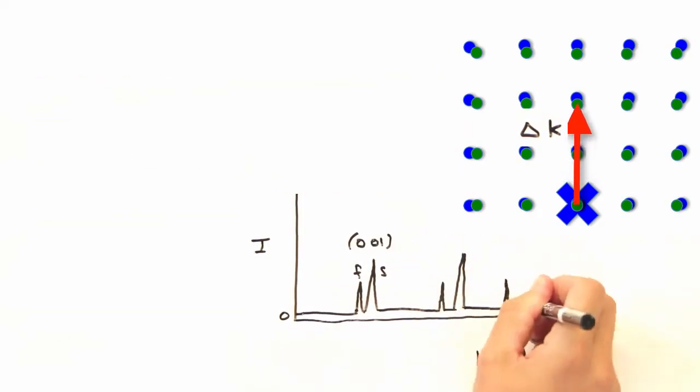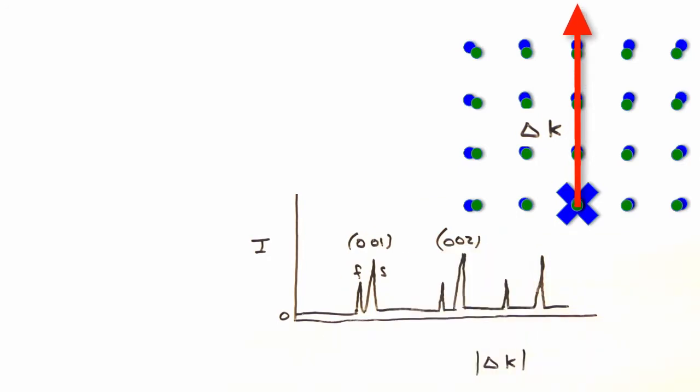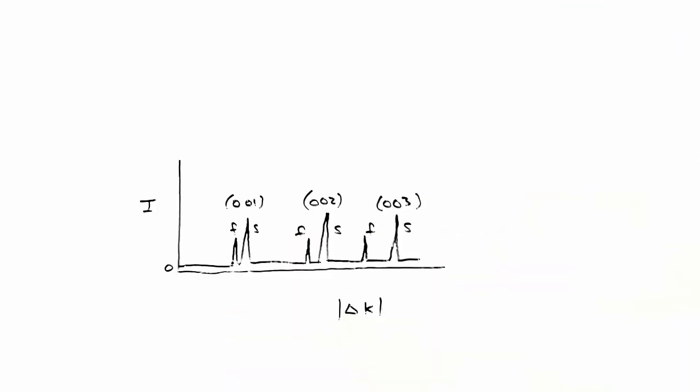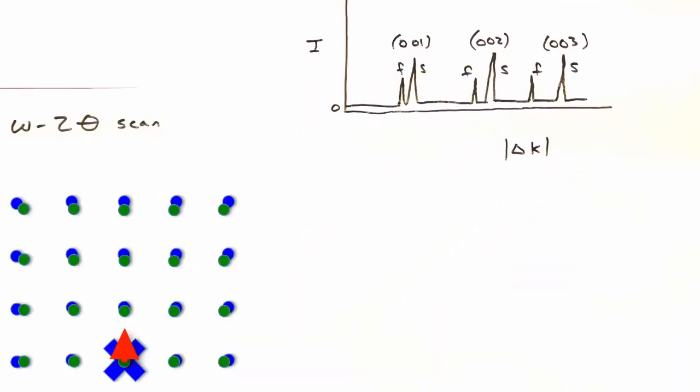And this would continue for the 002 reflection and so on until we see an intensity pattern that looks like this.